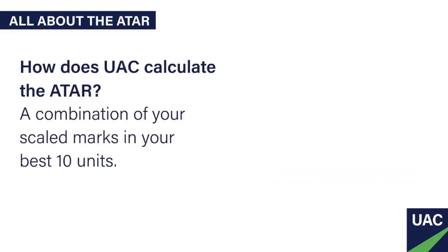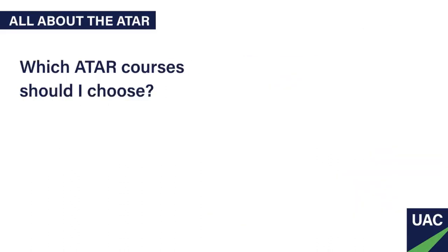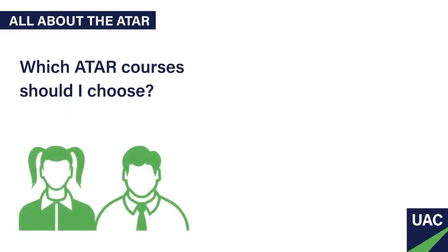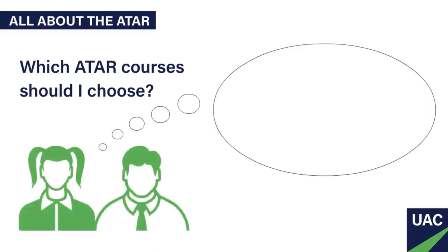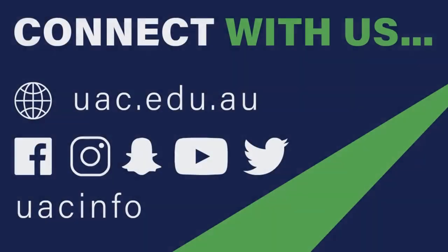And how is it calculated? Put simply, your ATAR is based on a combination of your scaled marks in your best 10 units. So if you study more than 10 ATAR units for your HSC, your ATAR will be calculated using your best 2 units of English and your best 8 remaining units. Which courses should you choose for your HSC? You can answer this by asking yourself: which courses are my strongest, and which do I enjoy the most? Remember too, that there is more than one way to get into uni. Go to the UAC website at uac.edu.au and find out how to access your potential.